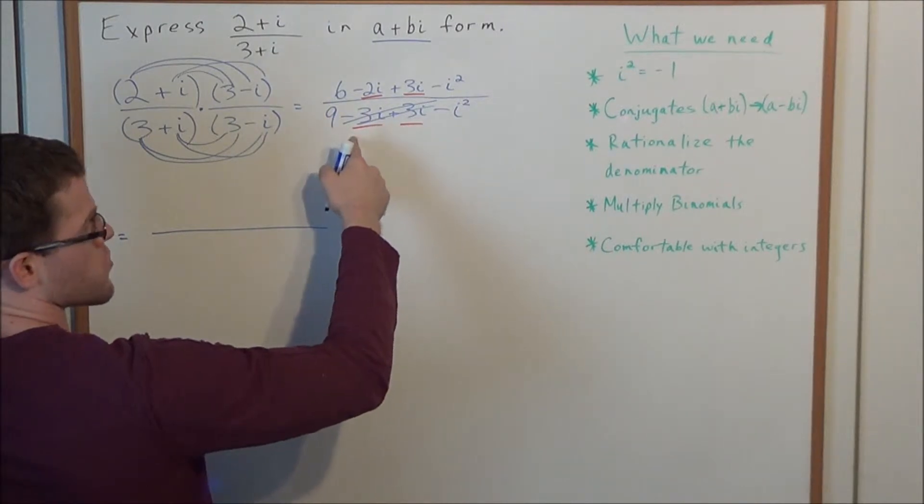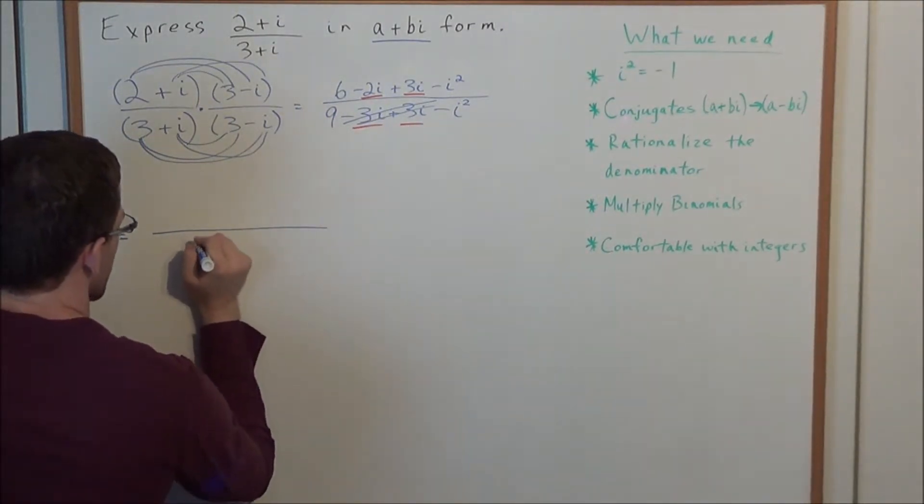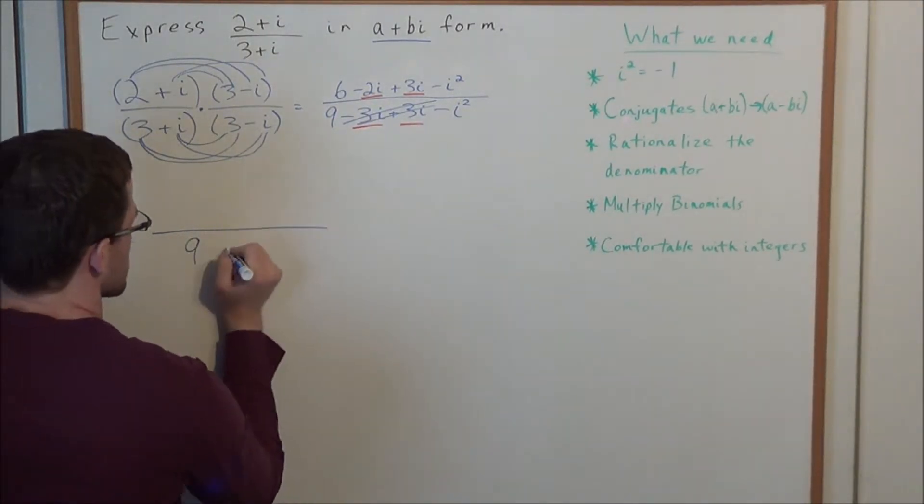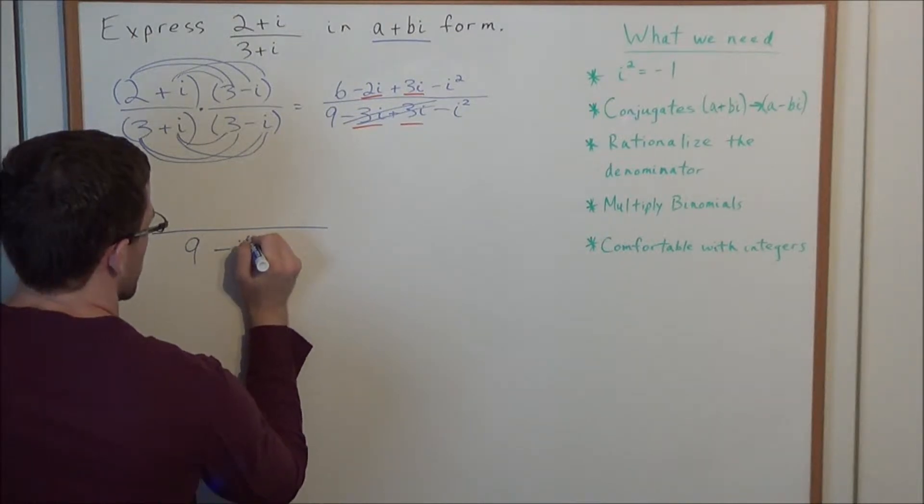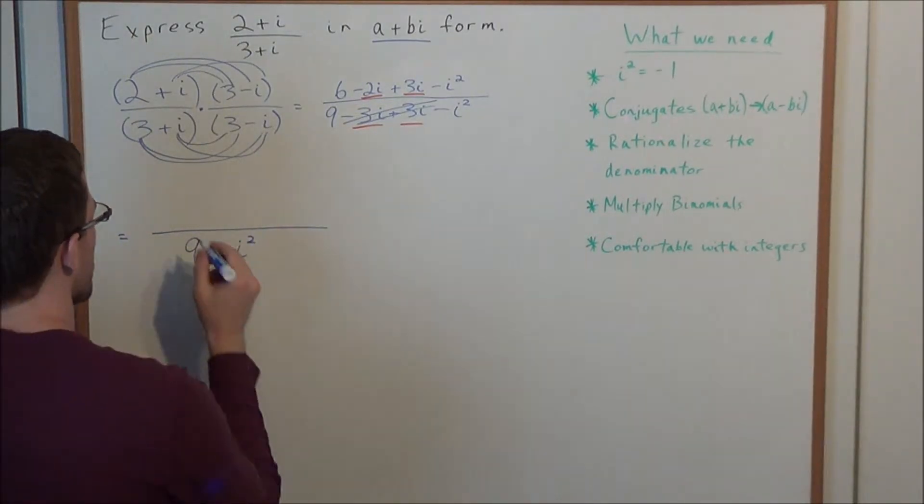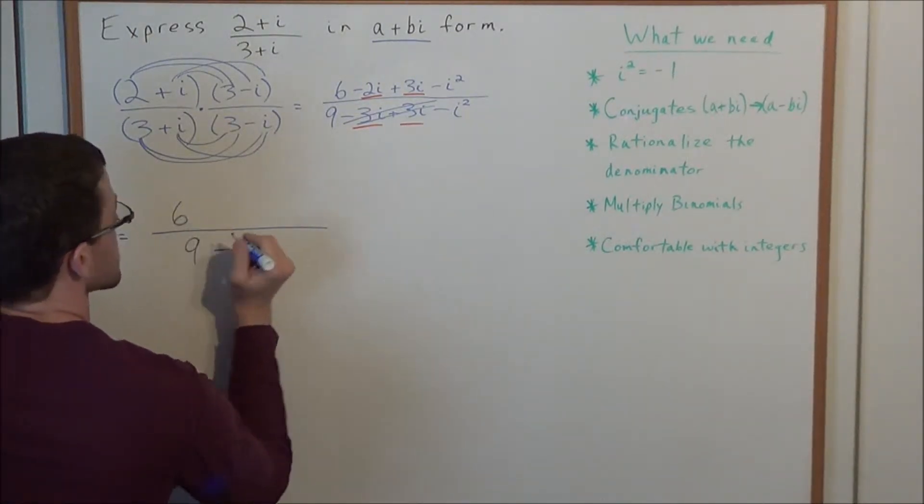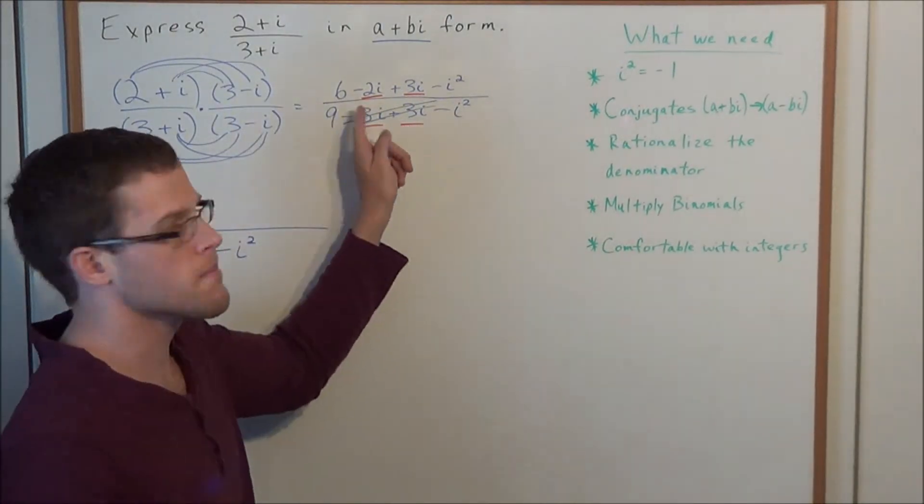The 3i is cancelled out, the minus 3i and the plus 3i. So all that was left is 9 and now minus i squared. And now in the numerator, we have 6, a positive 6.